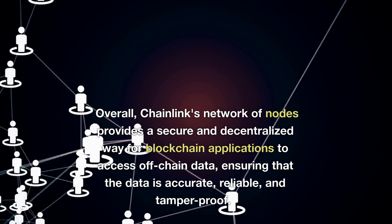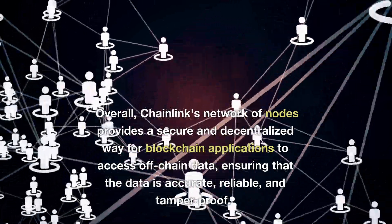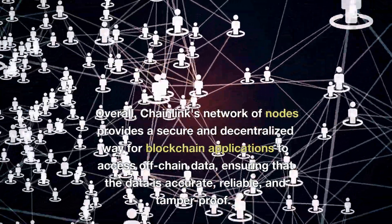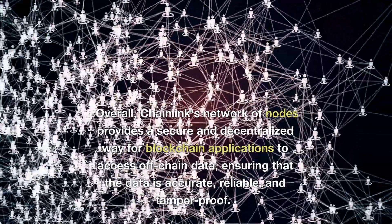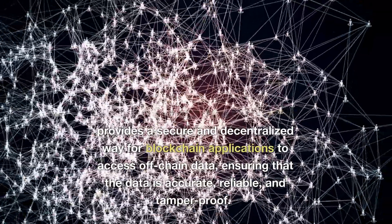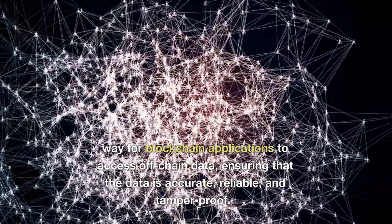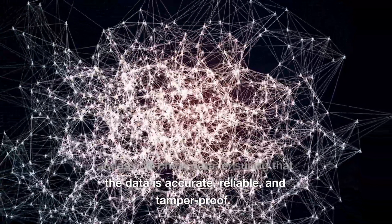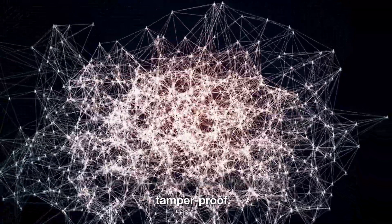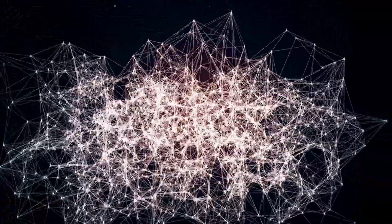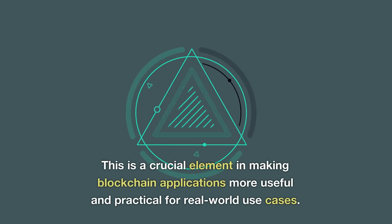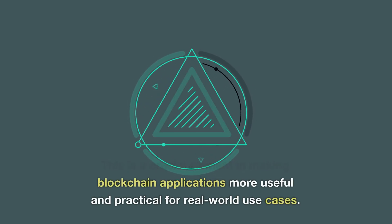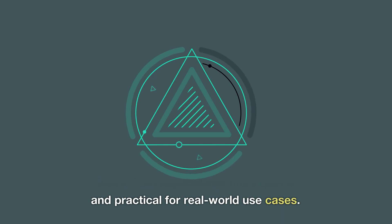Overall, Chainlink's network of nodes provides a secure and decentralized way for blockchain applications to access off-chain data, ensuring that the data is accurate, reliable, and tamper-proof. This is a crucial element in making blockchain applications more useful and practical for real-world use cases.